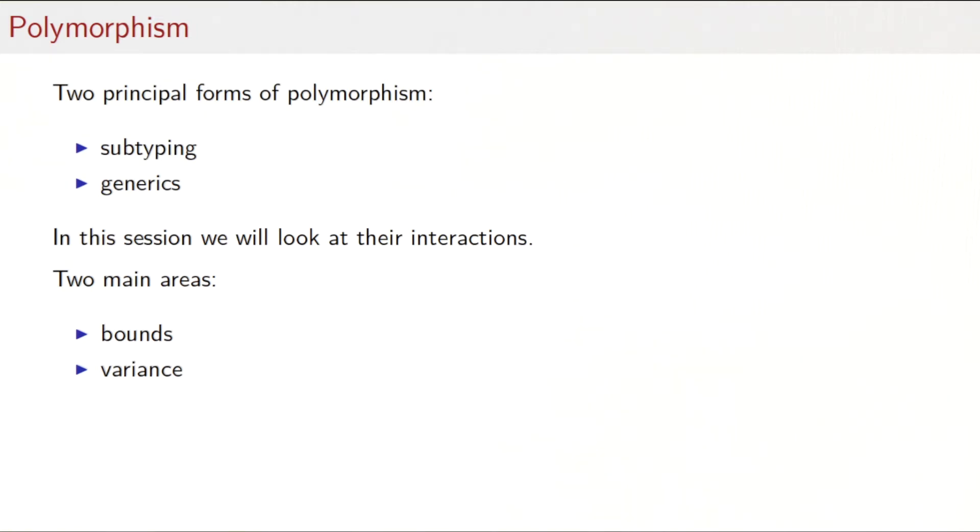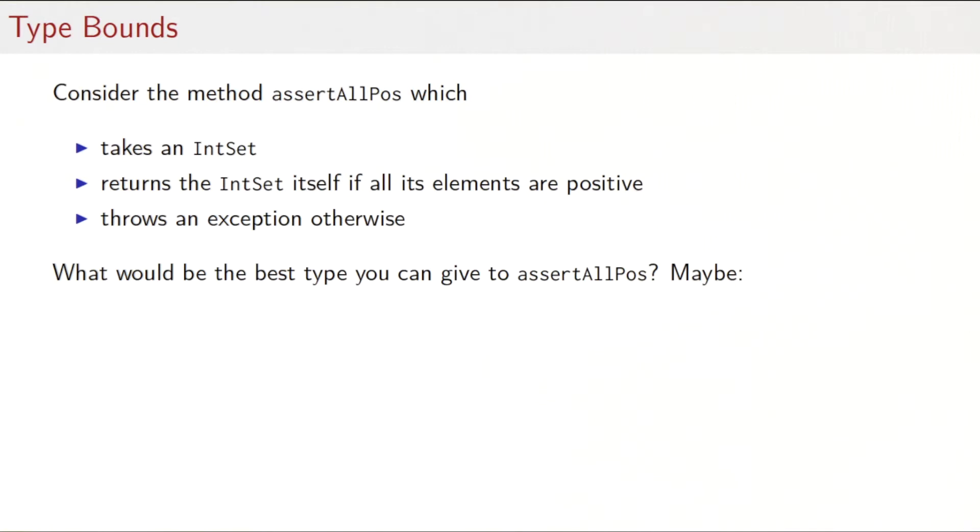In this session, we will look at the interactions between the two concepts. There are essentially two main areas to cover. The first one is bounds, where we can subject type parameters to subtype constraints. And the second is variance, that defines how parameterized types behave under subtyping.